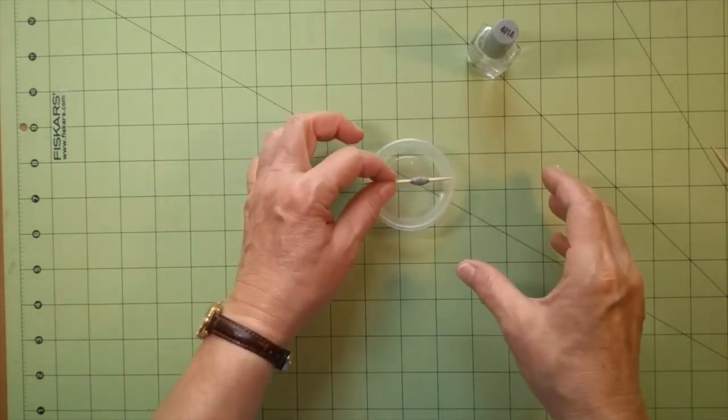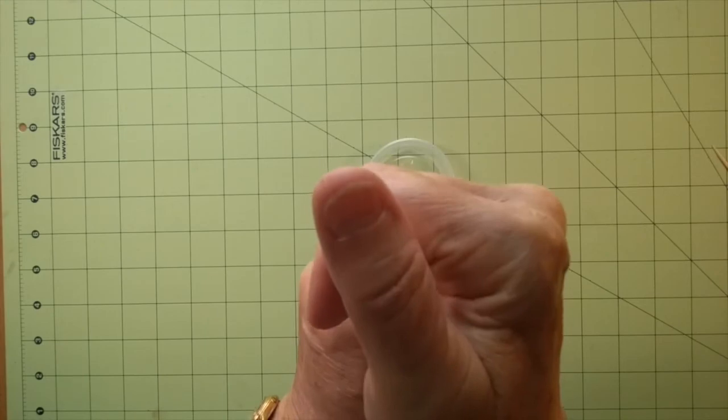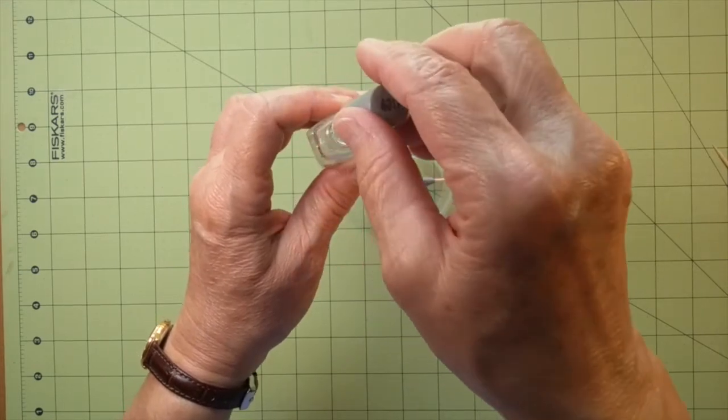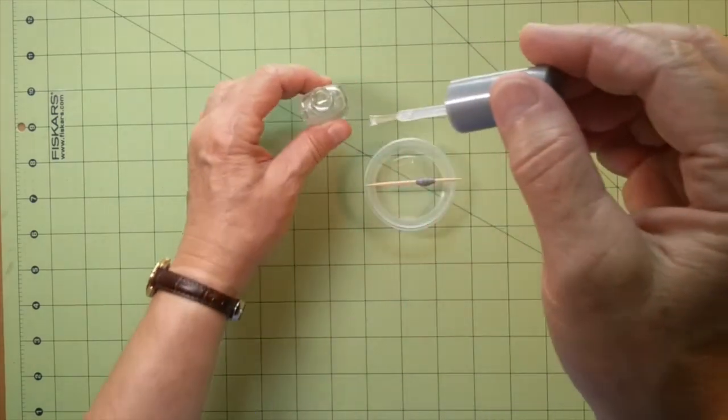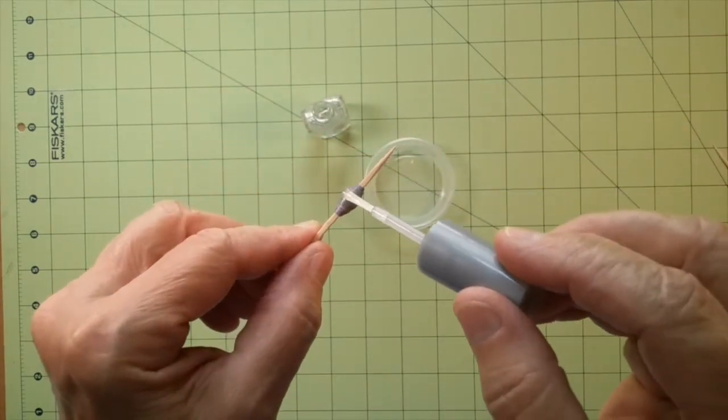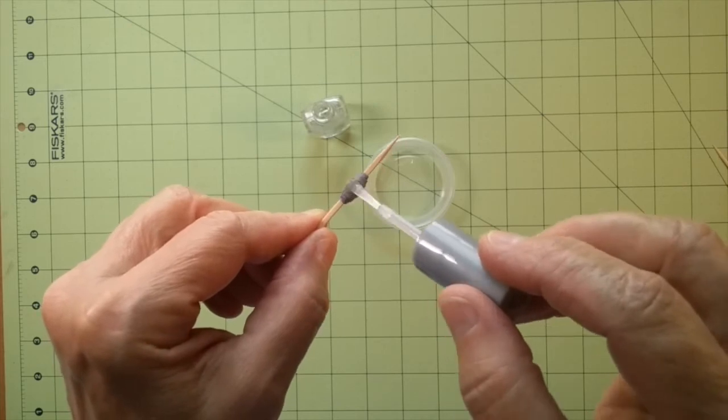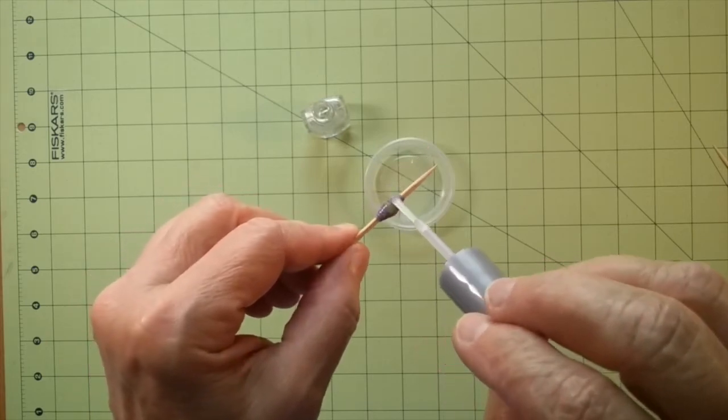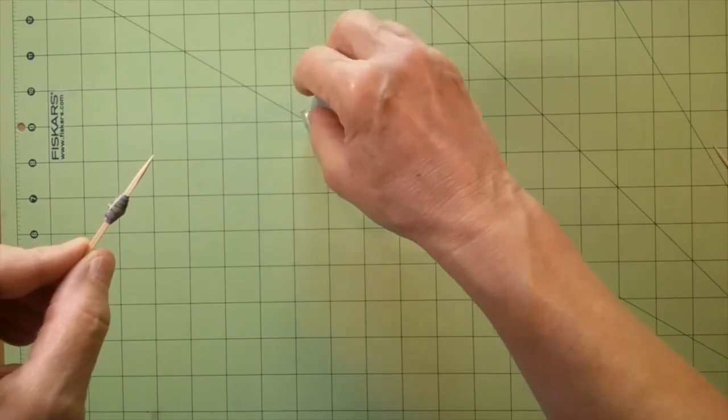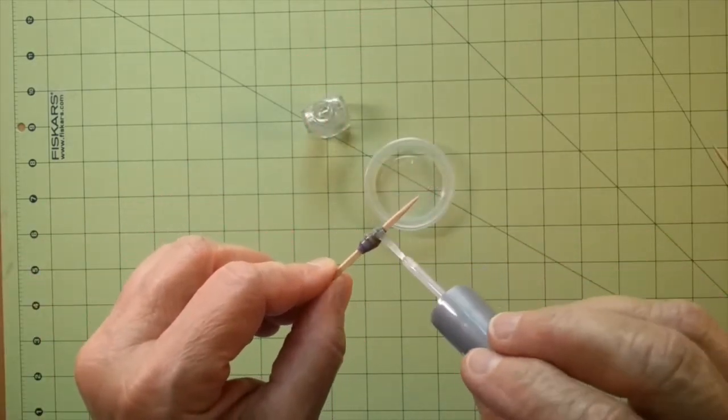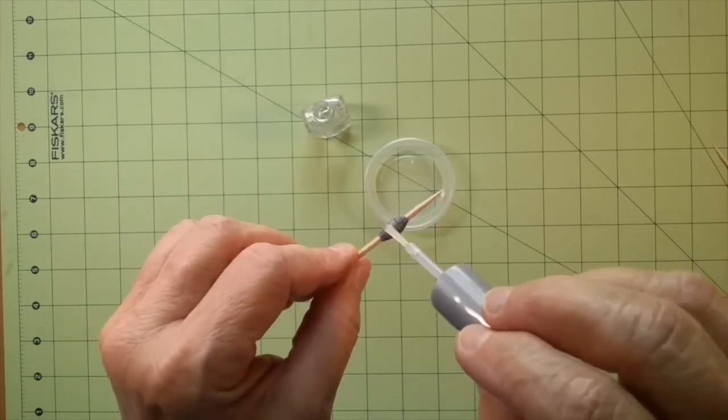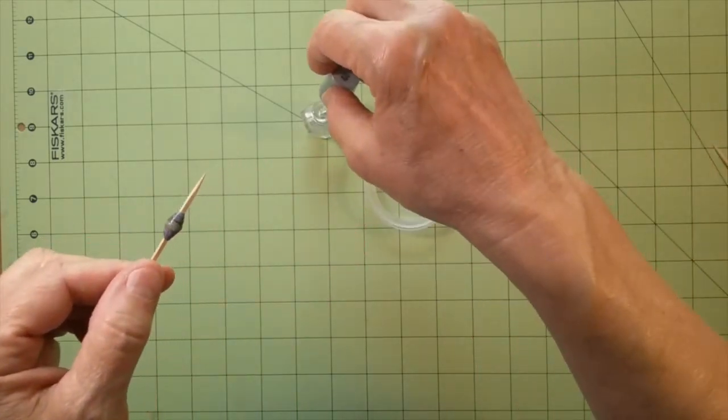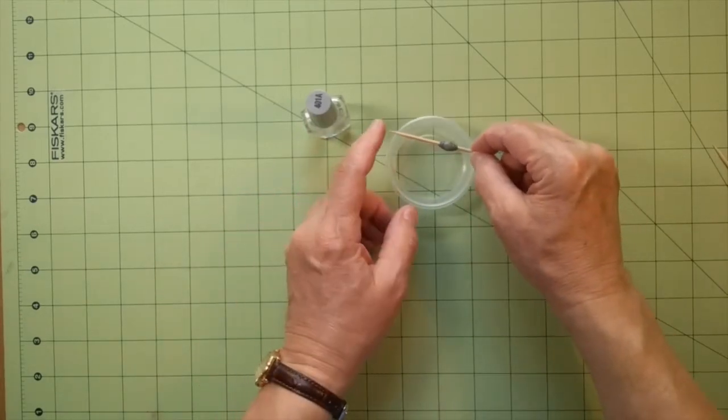So here's my bead. Unscrew my fingernail polish. And just lightly coat the bead with the polish. Try not to get it on the toothpick too much. And then once you have it all coated, put it back down in your little drying container.